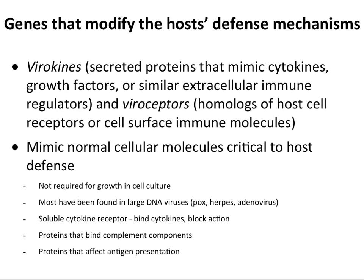Now, genes that modify immune defenses. There are viral cytokine mimics — virokines — that inhibit cytokine activity by binding to receptors, and mimics of cytokine receptors that are soluble and bind up actual cytokines. These are not needed for replication in cells — you can take them out and the virus grows fine in culture. Most are in large DNA viruses like poxviruses and herpesviruses. There are also proteins that affect antigen presentation, autophagy, and apoptosis.